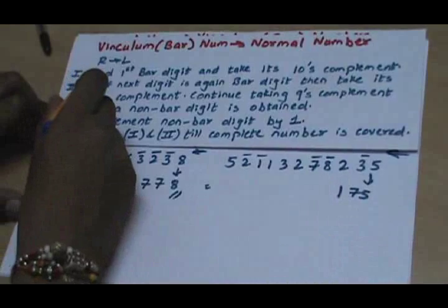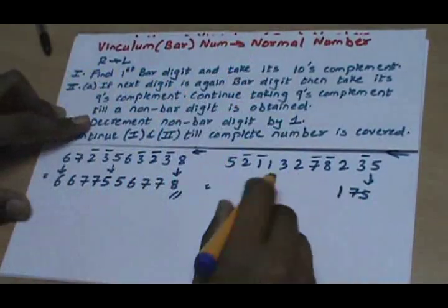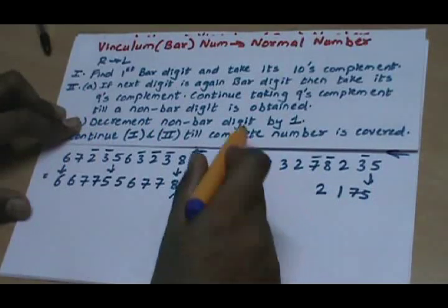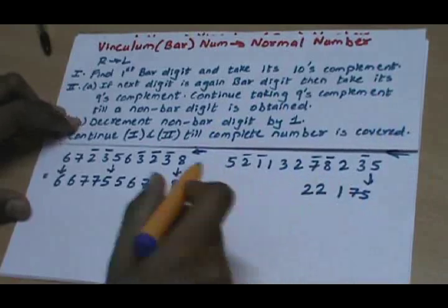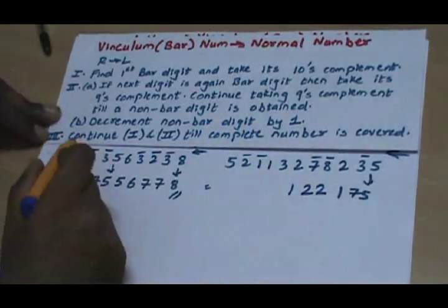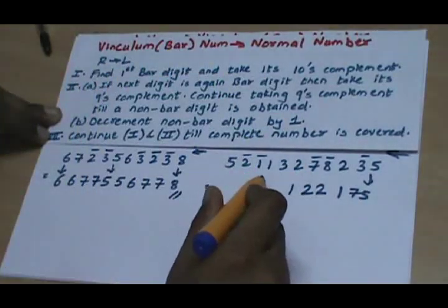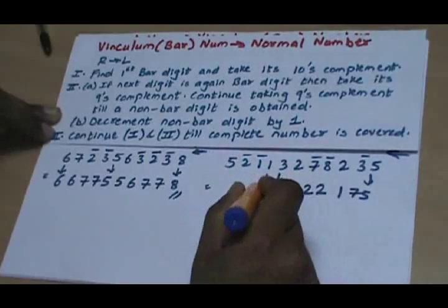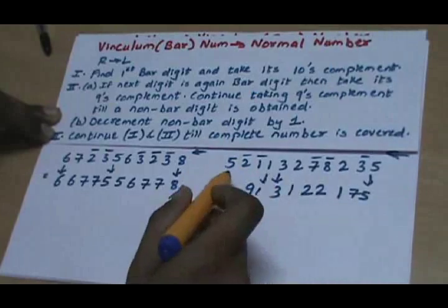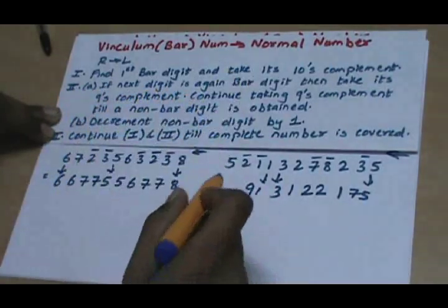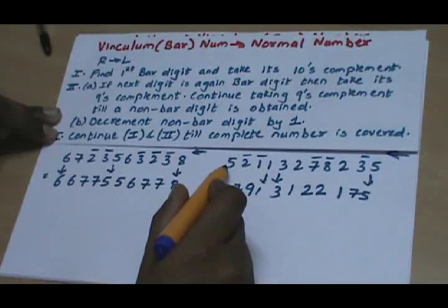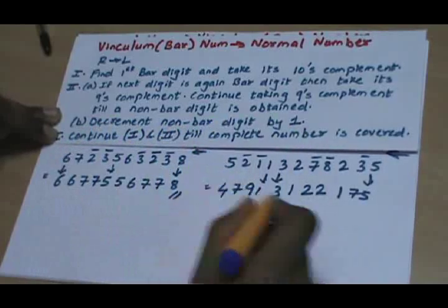Continuing with Step 1, the next first bar digit is 8̄. We take its tens complement, giving 2. The next digit is also a bar digit, so its 9s complement is 2. The next digit is a non-bar digit, so we decrement it by 1, giving 1. Continuing, the next first bar digit is 1̄. We write 1 and 3 as they are, take the tens complement of 1̄ to get 9. The following bar digit's 9s complement is 7, and decrementing the next non-bar digit by 1 gives 4. That's your answer.